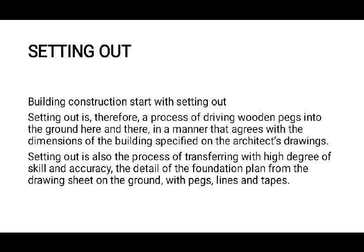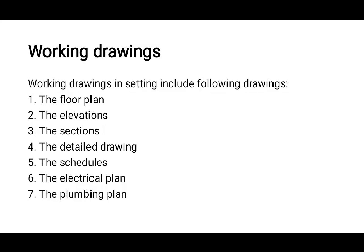The working drawings used in setting out include the floor plan, the elevation plan, the section plan, the detail drawing, the schedule, the electrical plan, the plumbing plan, and the garden plan. You have to get every working detail on the setting out plan that is given to the engineer.